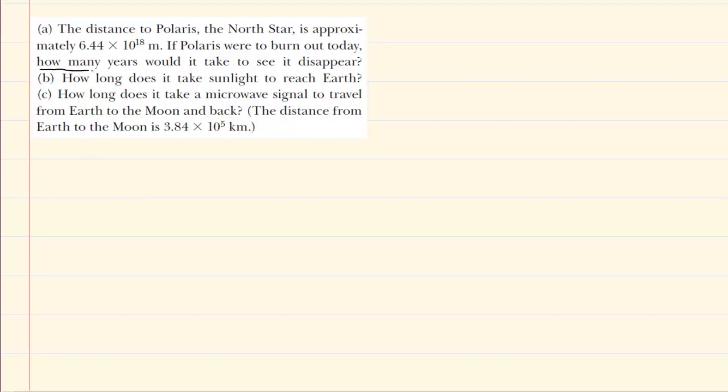In Part A, we are asked to figure out how many years it's going to take light to travel from a star to Earth. Most of us remember from Physics 101 that the travel time that an object requires is equal to the distance divided by the speed.